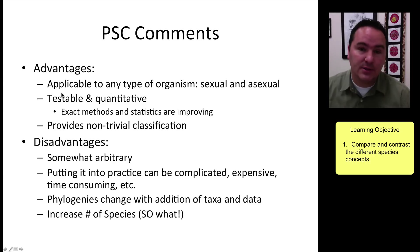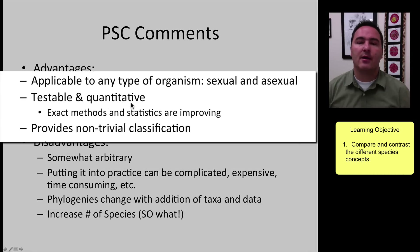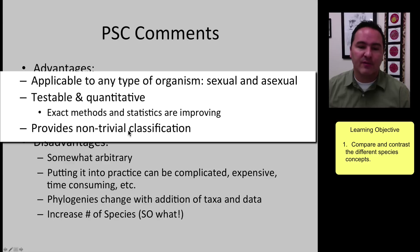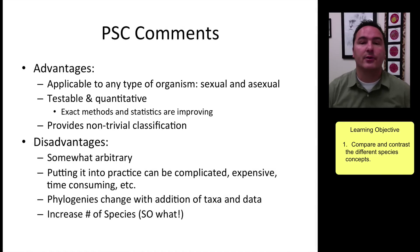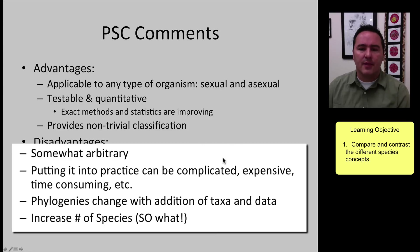The advantages of the phylogenetic species concept are that it's applicable to all types of organisms — sexual, asexual, and fossils. It is also testable and quantitative, removing some of the arbitrary authoritative nature of the morphological species concept. It provides a good non-trivial classification system that represents the underlying evolutionary history of organisms.